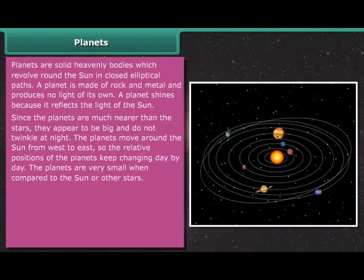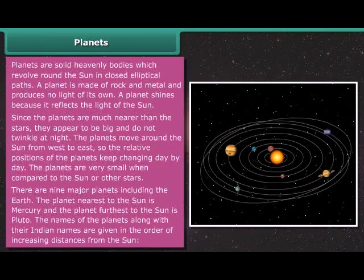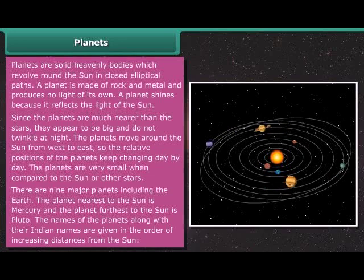The planets move around the Sun from west to east, so the relative positions of the planets keep changing day by day. The planets are very small when compared to the Sun or other stars. There are nine major planets, including the Earth. The planet nearest to the Sun is Mercury and the planet farthest to the Sun is Pluto.